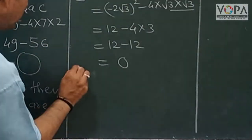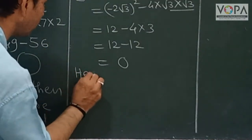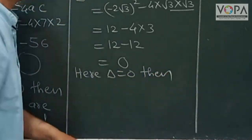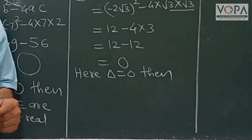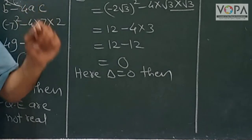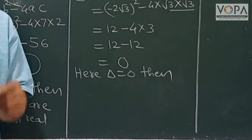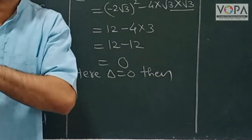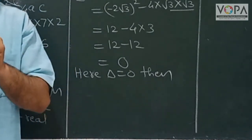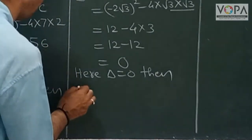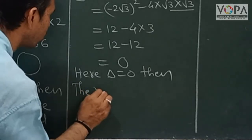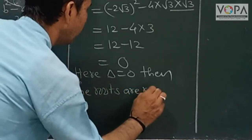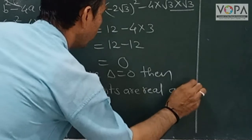The value of delta is 0. Conclusion: here delta is equal to 0, then the roots of the quadratic equation are real and equal. The roots are real and equal.